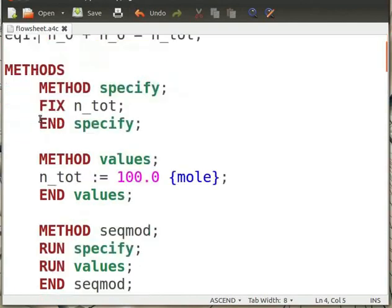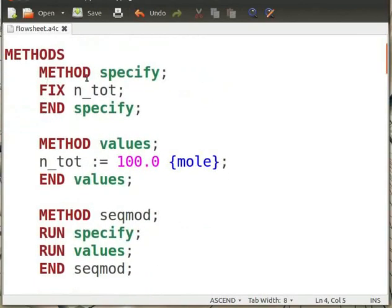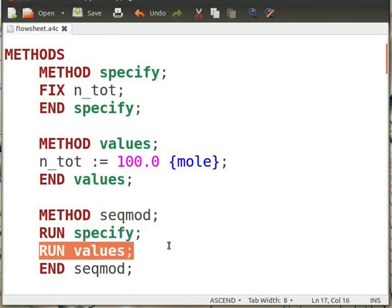Let's now define methods for solving the mixer. Under method specify, we fix the variable n_tot. Under method values, n_tot is assigned the value 100 mole. Method sec_mode signifies setting the model in sequential modular simulation. This signifies that given feed streams and unit operation specifications, Ascend will calculate intermediate and outlet streams. Under this method, run specify and run values.